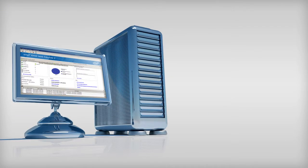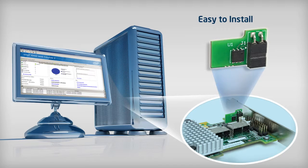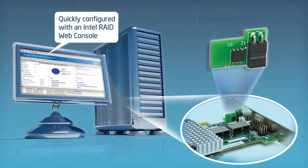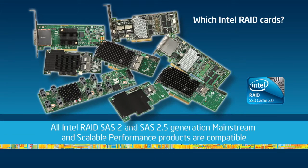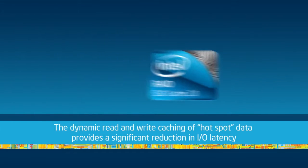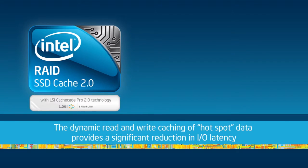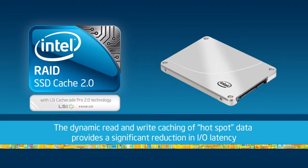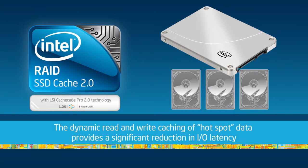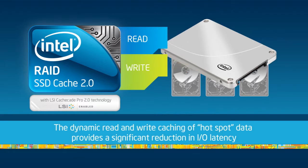With all of the performance benefits outlined, don't wait to take advantage — install Intel SSD Cache 2.0. You'll be amazed at how easy the install is and how quickly it can be configured with an Intel RAID web console. Since all Intel RAID SAS 2 and SAS 2.5 generation mainstream and scalable performance products are compatible with Intel SSD Cache 2.0, it is a simple add-on. Leverage the strengths of both hard drives and SSD technology as Intel SSD Cache 2.0 accelerates I/O performance of existing hard disk arrays using SSDs as high-performance cache. This software is optimized for real-world workloads of transaction-intensive applications, and the dynamic read-and-write caching of hotspot data provides a significant reduction in I/O latency. For more information, please visit intel.com/go/RAID.